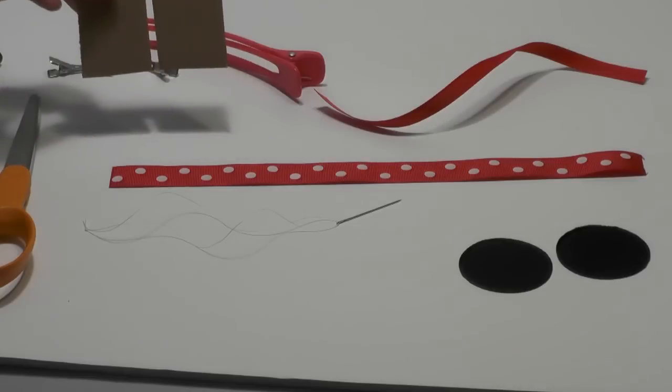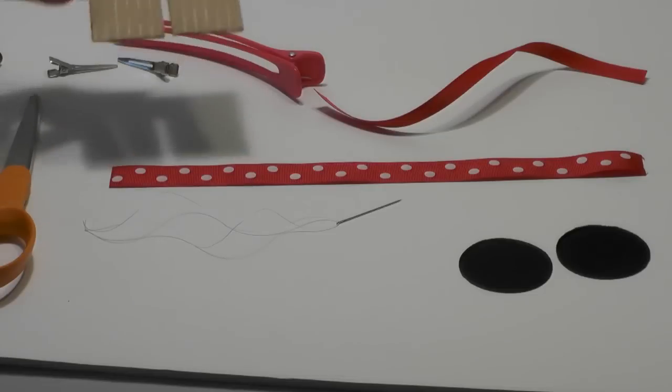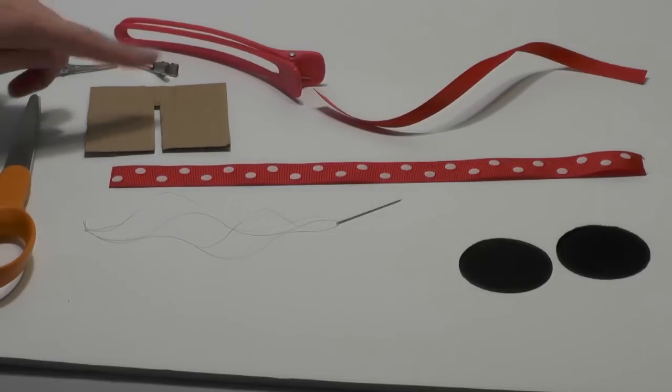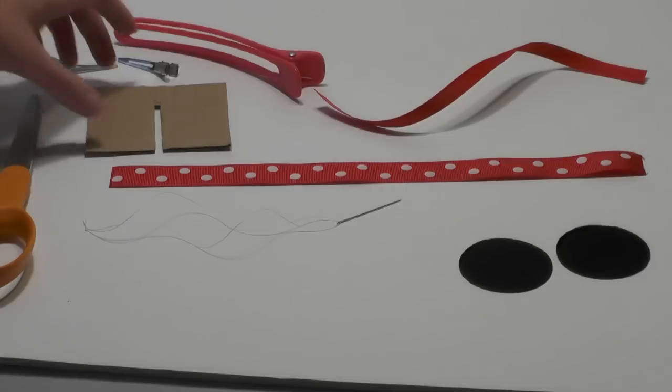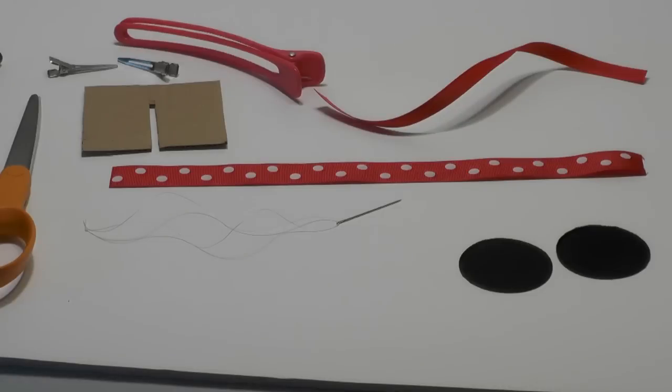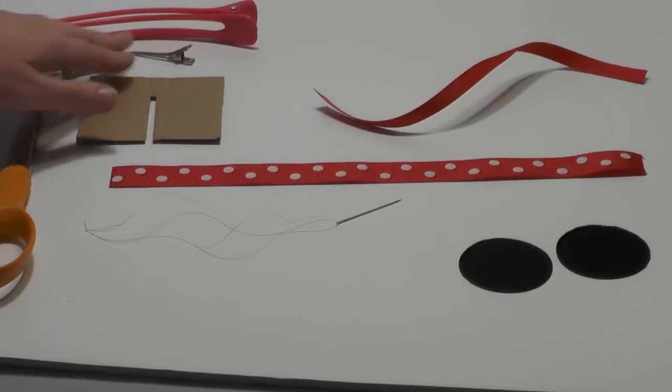I'm also going to be using my 3-inch cardboard template. These are really easy to make - you can find tutorials online or scroll back through the videos. It's basically just taking cardboard and cutting it into the size that you want: three inch, four inch, five inch. It just helps you keep your loops even. I'm using my three-inch template, I've got my big salon clip and a couple alligator clips that are going to go with that when we get ready to sew it up.